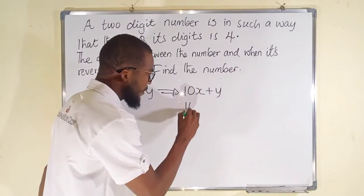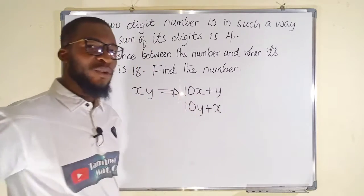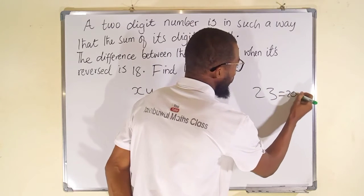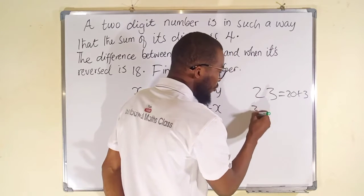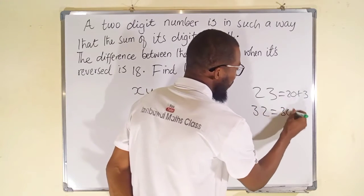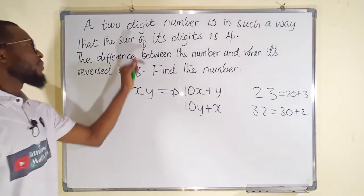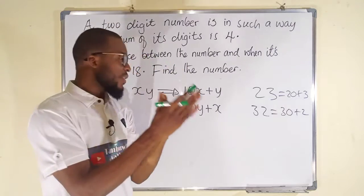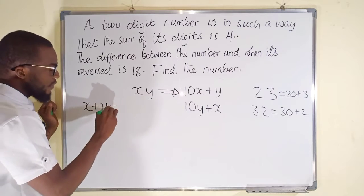Alright, and the reverse form of this will be 10Y plus X. If you reverse the number, because 23 is 20 plus 3, and the reverse form of 23 is 32, which is 30 plus 2. Can you see that? Okay, the first statement here says if you should add the two numbers together you're going to obtain 4, so therefore X plus Y will give us 4.